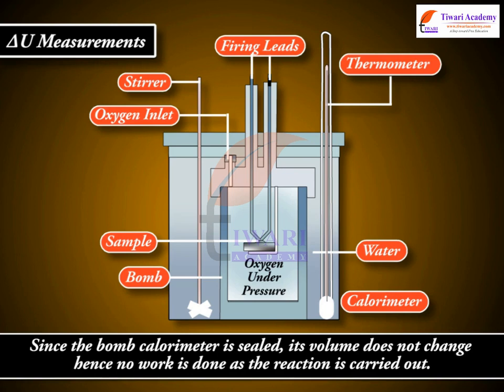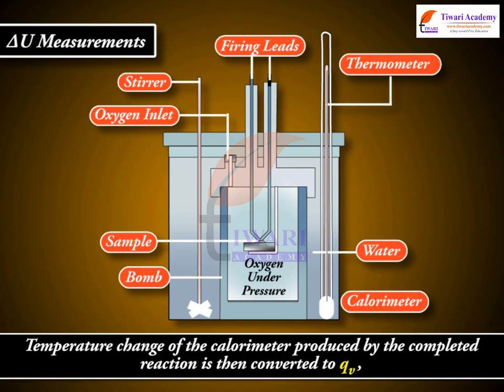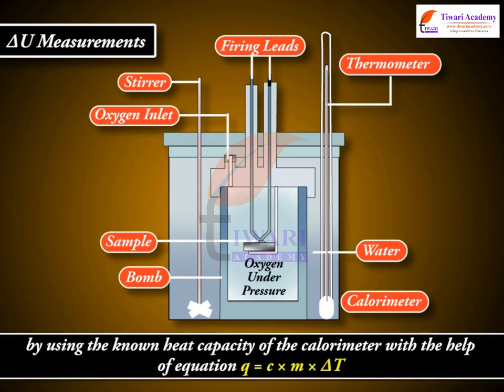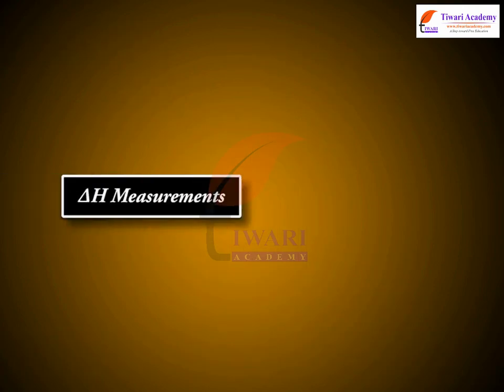Since the bomb calorimeter is sealed, its volume does not change, hence no work is done as the reaction is carried out. The temperature change of the calorimeter produced by the completed reaction is then converted to Q_V by using the known heat capacity of the calorimeter, with the help of the equation Q = C × m × ΔT.